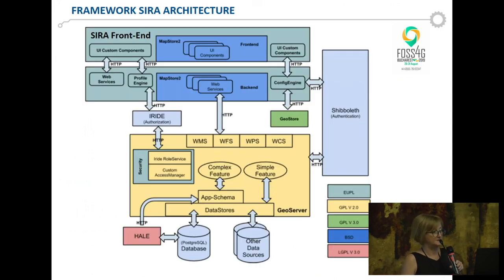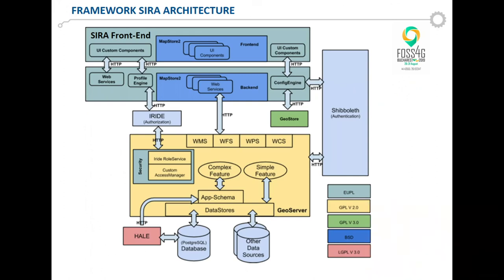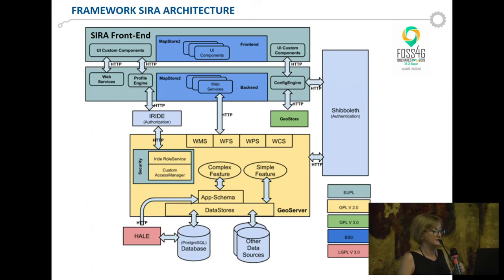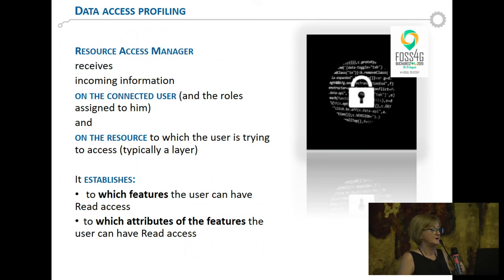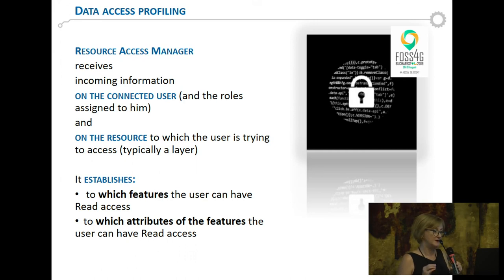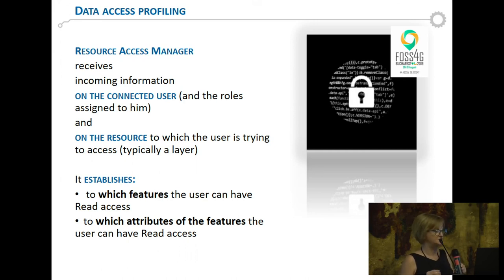This is the schema of the architecture — you can look at this slide after the presentation with all the licenses. We also have an important part, which is the resource access manager, because we need each user profile to access only part of the information. Not all the information we manage is for free access. Each user is recognized by the application, and we can establish which features and which attributes of a feature the user is allowed to read.